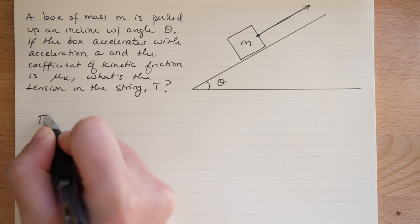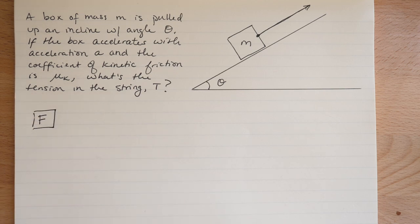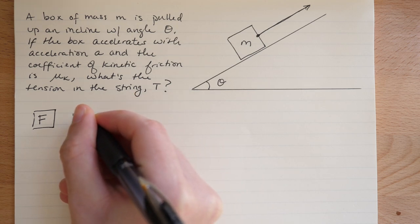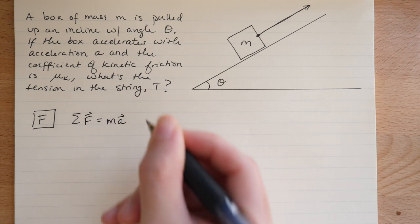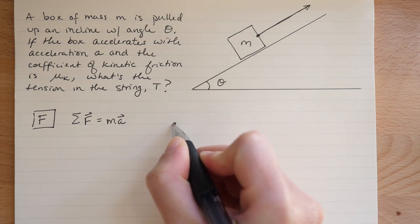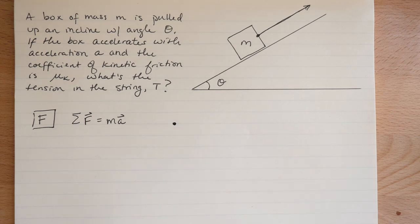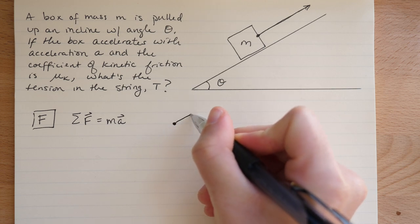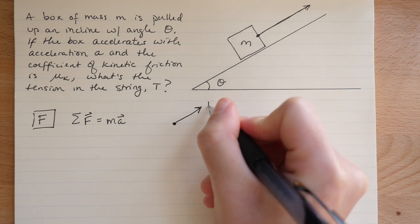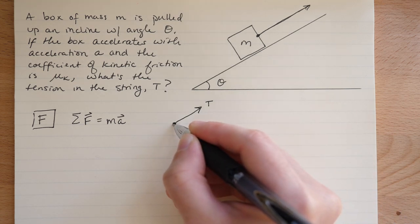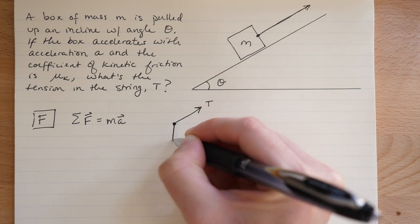So we start with F, which stands for Newton's second law, net force equals the mass times the acceleration. We also need to do the free body diagram for this picture. In this case, we'll draw a little dot to represent our mass, and now we'll start drawing the forces on it. We have the tension force which points that way, up the incline.